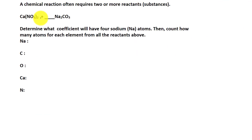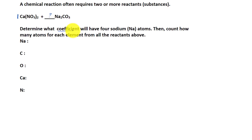Let's try another one. Here I have 2 reactants. It looks a lot more complicated, but the first reactant doesn't have a coefficient shown, which means it must be 1. The question mark is for the second reactant's coefficient. Determine what coefficient will give us 4 sodium atoms, then count the atoms again for each element once we're done. Sodium is Na.